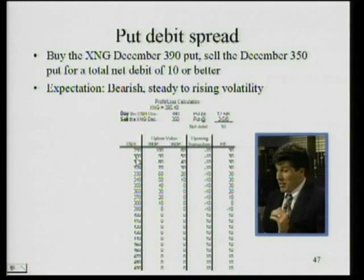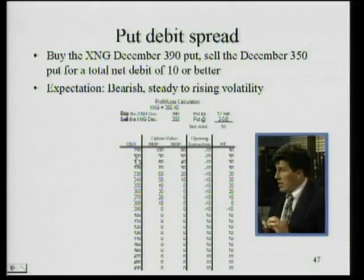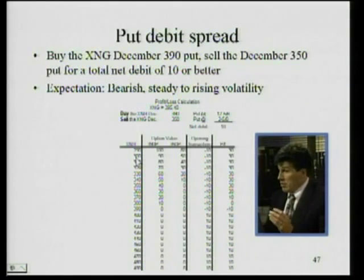Let's take a look at how the profits and losses are calculated on this particular position. These are puts, so don't want to get them confused with calls. In this instance, we have bought the 390 put, which means we have the right to put that into someone else's hands. So if the index were to drop to 300, we could buy it for 300 and then put it into that person's hand for 390. So we would buy for 300, sell at 390 — the option's worth 90, and we would make that 90.